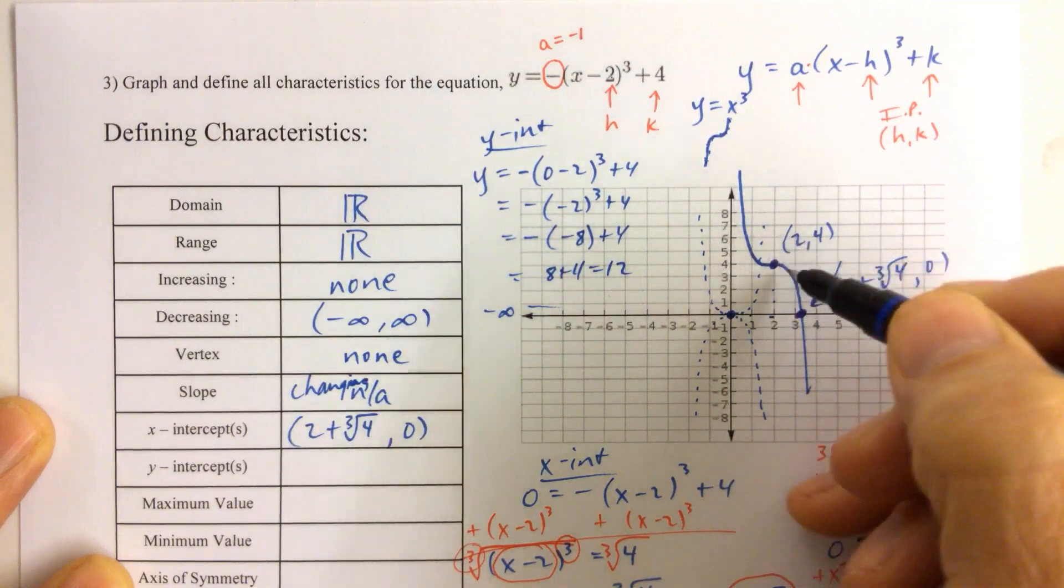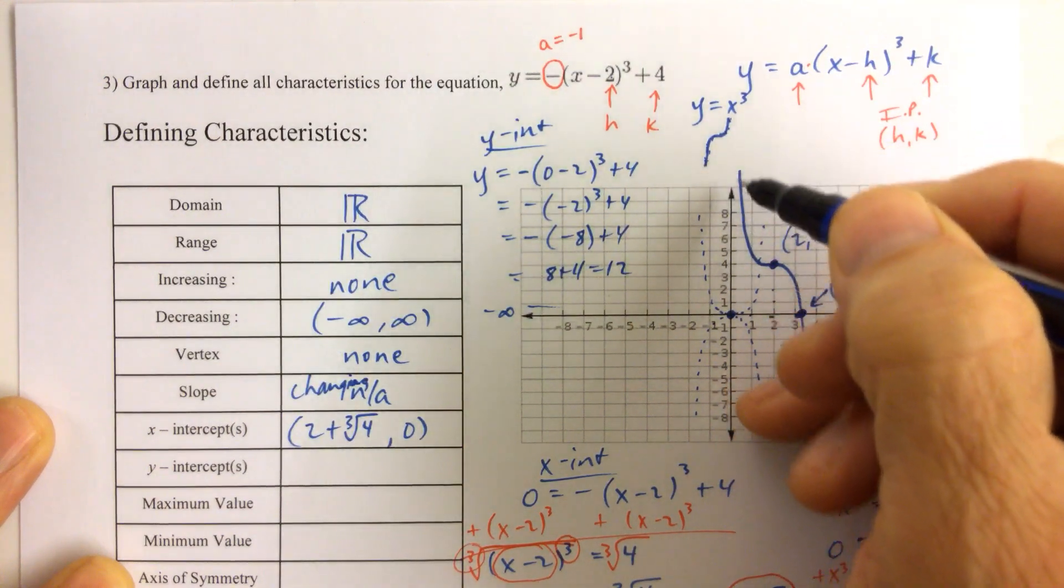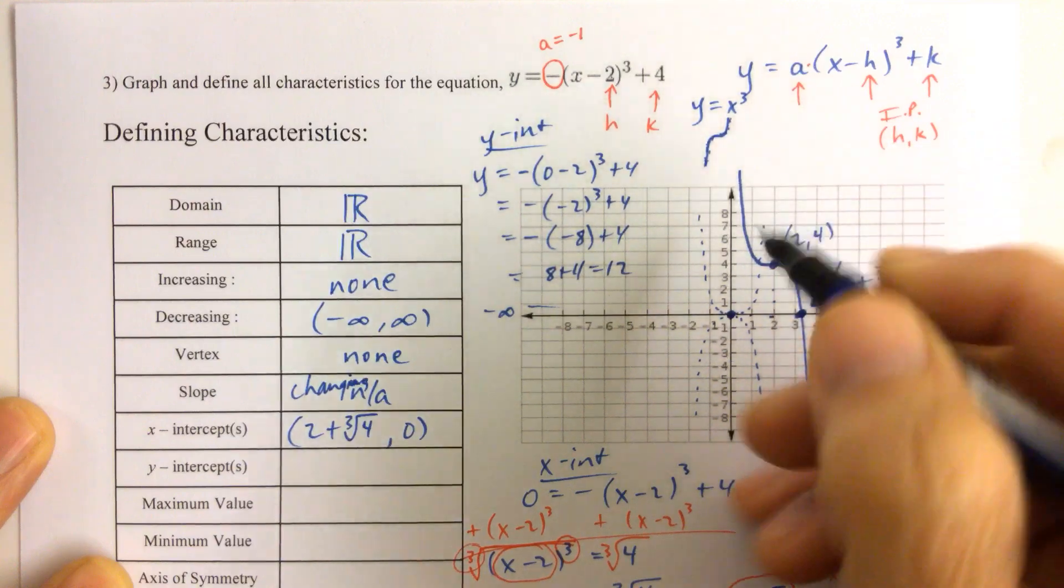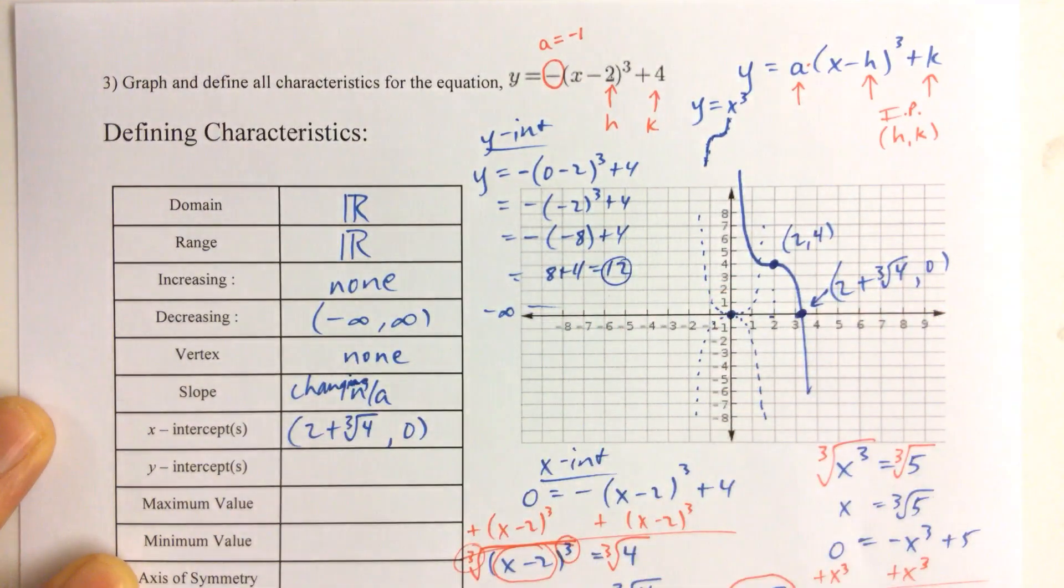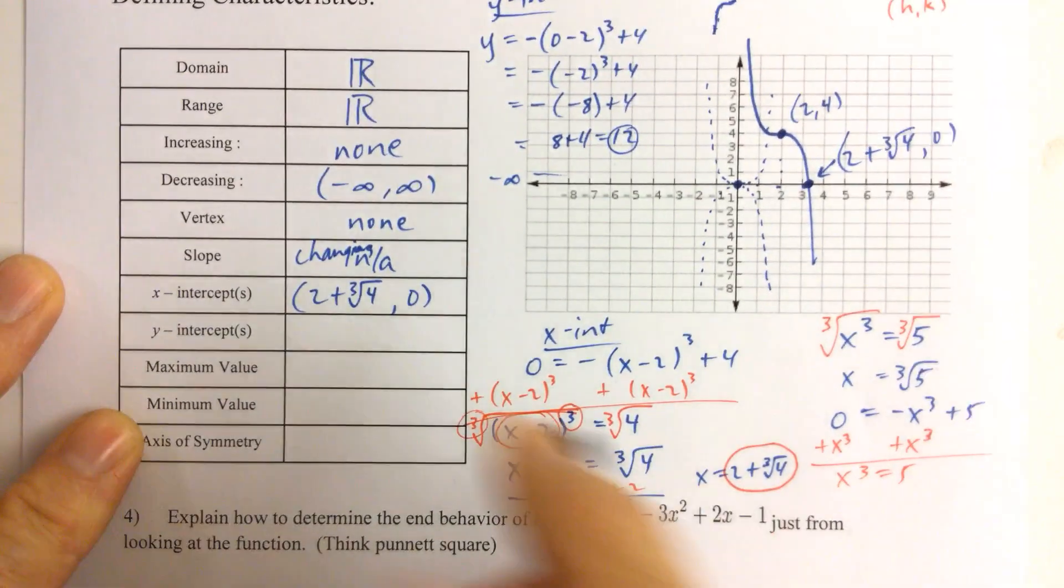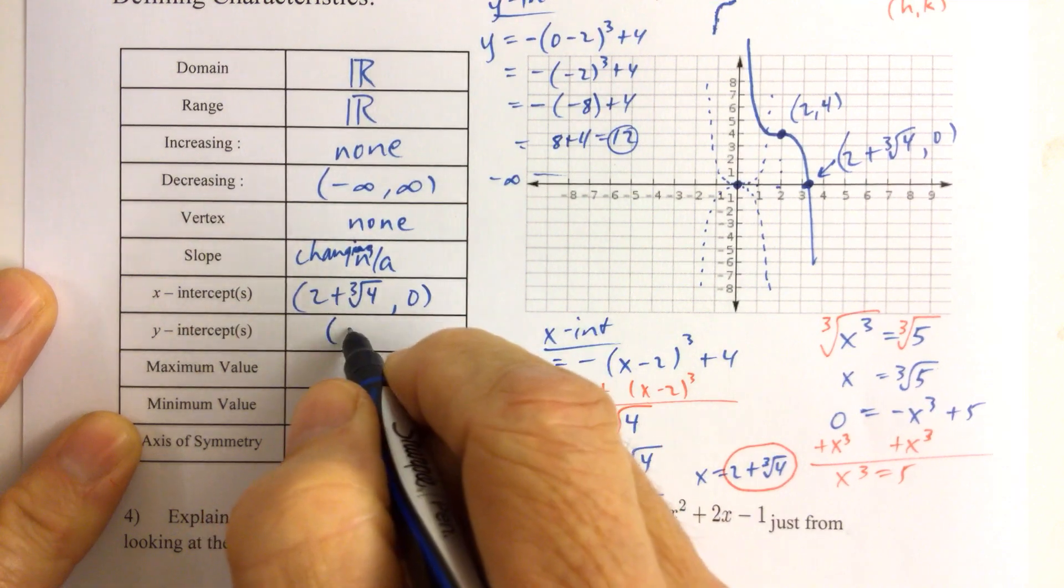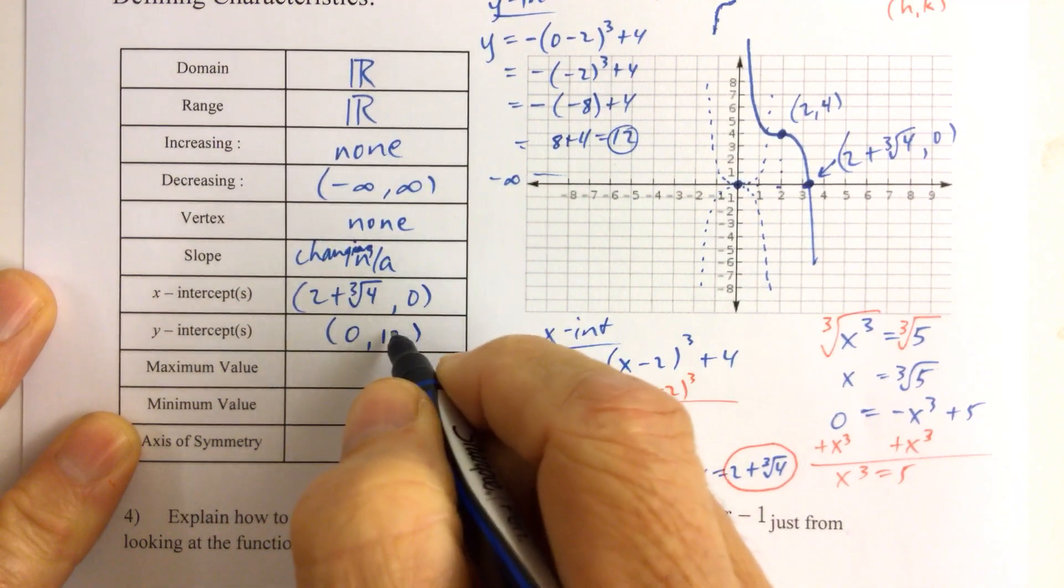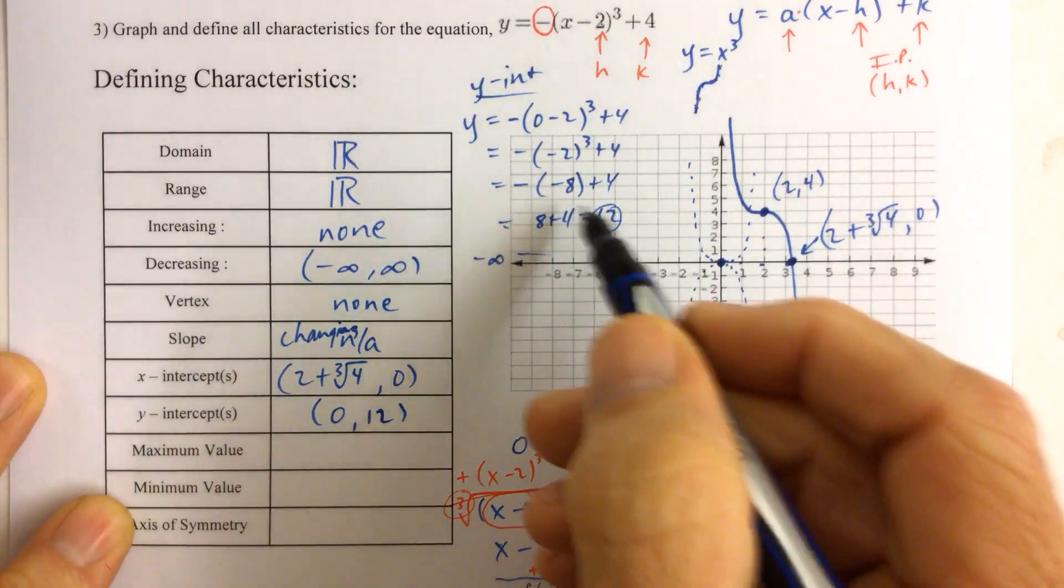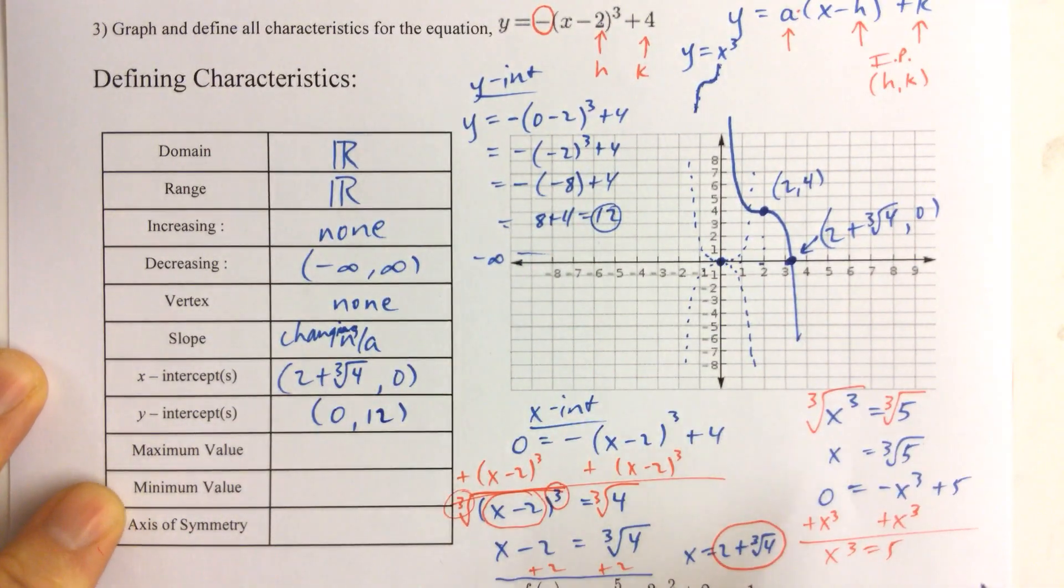And that matches. I didn't look for the y-intercept before I drew this, so it's up there somewhere. So 12 would be where the graph would cross the y-axis. And so that would be our y-intercept, 0, 12. Make sure you're showing your work for not only the y-intercept, but also for the x-intercept.